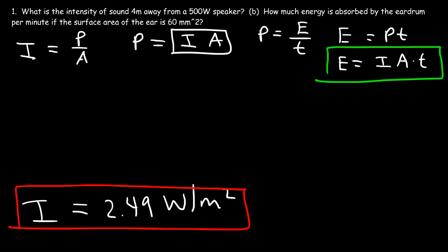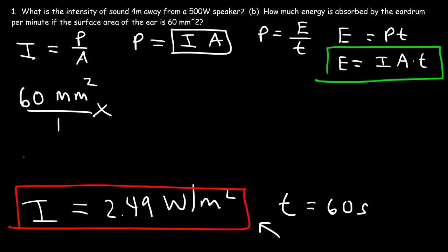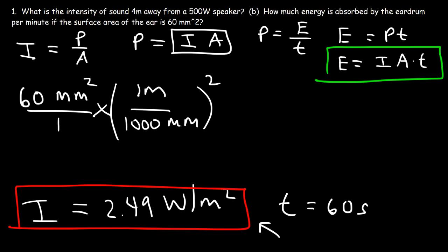We want the energy absorbed per minute, so one minute equals 60 seconds — that's our time t. We already have the intensity. We need the area in square meters: the eardrum area is 60 square millimeters. One meter equals 1000 millimeters, but since the unit is squared we square the conversion factor: 60 divided by 1000 squared gives 6 × 10⁻⁵ square meters.